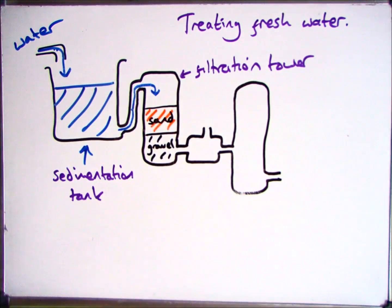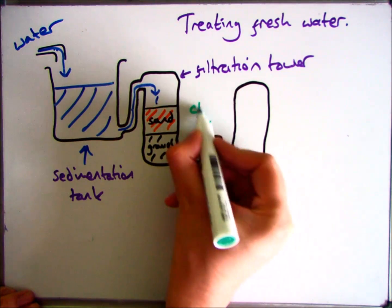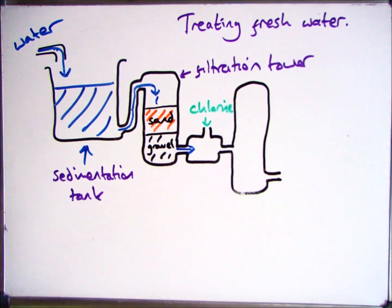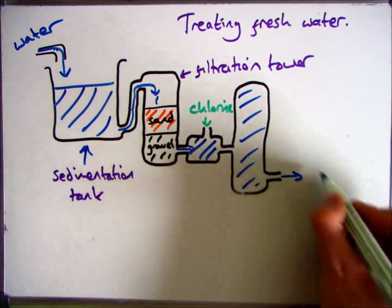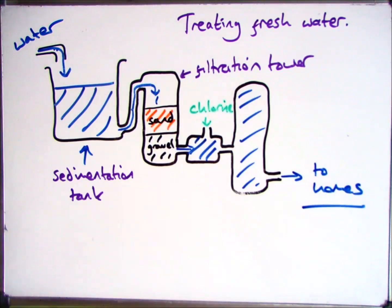The next step is for all that to go into the chlorination tank. In here, chlorine is added to kill the bad microorganisms and bacteria that you don't want. This will then go into a storage tower where it will be kept safe until it's ready to be pumped into people's homes.